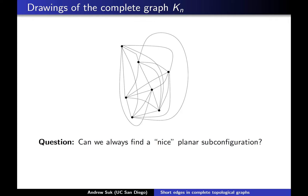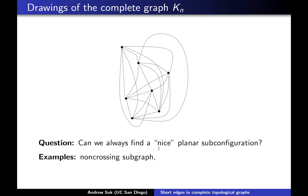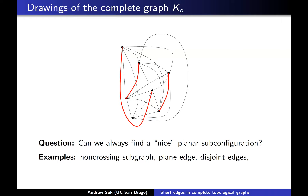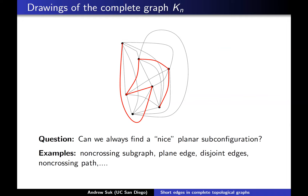A nice planar subconfiguration could be many things. For example, maybe you're interested in finding a large plane subgraph, or non-crossing subgraph, kind of like these red edges here. Or maybe you're interested in finding a plane edge — an edge that doesn't cross anybody else, like this red edge here. Or perhaps you're interested in finding many pairwise disjoint edges like these three red edges here, or more generally a long non-crossing path like these edges here. To me these are kind of nice planar subconfigurations.